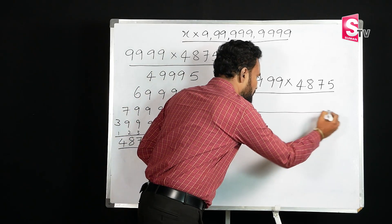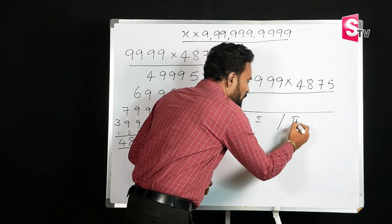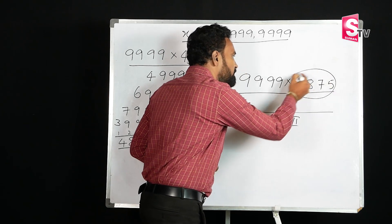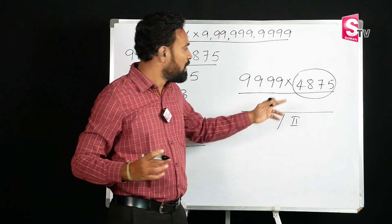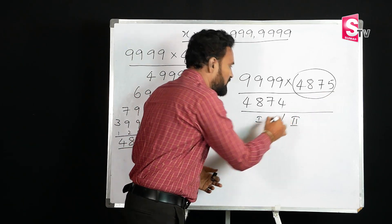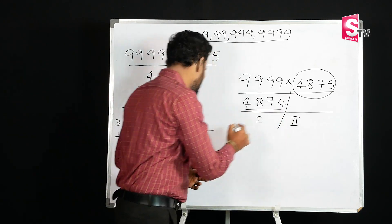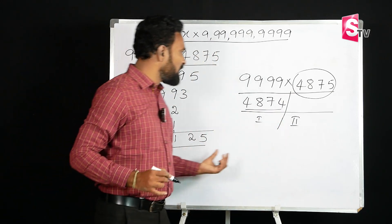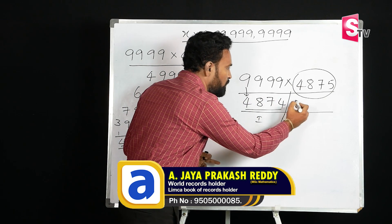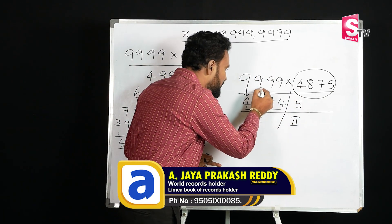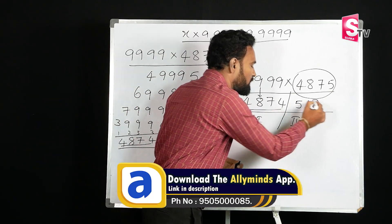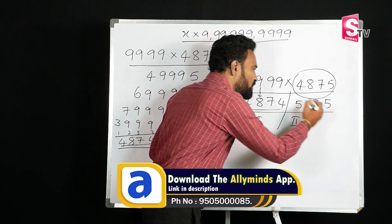Now we split the answer into two parts — first part and second part. The first part is the right-side number. What is 1 less than 4875? 1 less than 4875 is 4874. That is the first part of the answer. For the second part, we do subtraction: 9 minus 4 is 5, 9 minus 8 is 1, 9 minus 7 is 2.